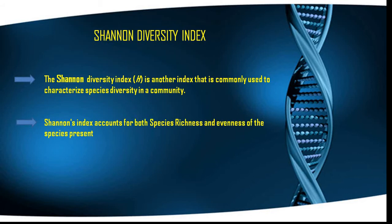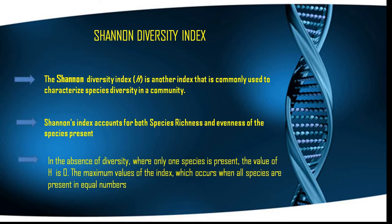It accounts for both species richness as well as the evenness of the species present. Species richness is basically the total number of species present in a sample, and evenness is a measure of the relative abundance of different species in a particular area, which we will discuss while solving the numericals.